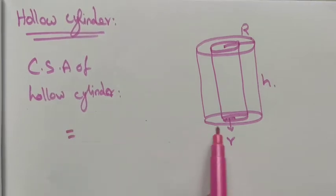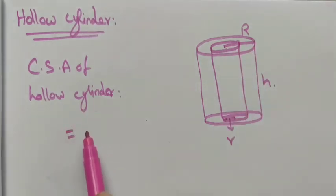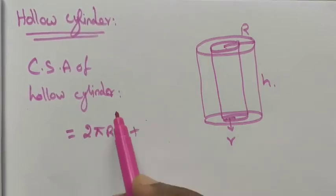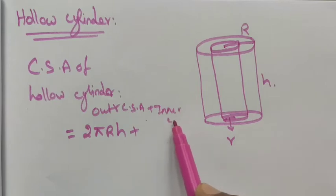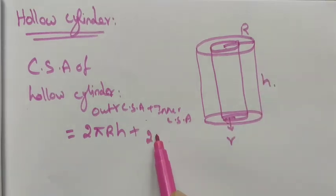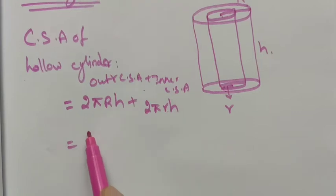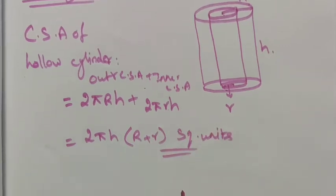The outer curved portion has capital R as the radius. The curved surface area formula for a cylinder is 2πRh, so the outer CSA is 2πRh. For the inner curved surface area, the radius is small r, so it is 2πrh. The common term is 2πh, so CSA = 2πh(R + r) square units.